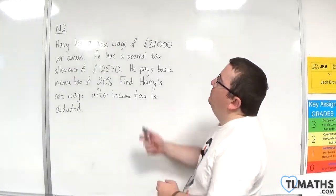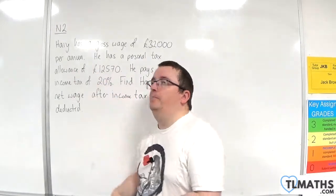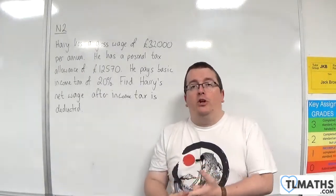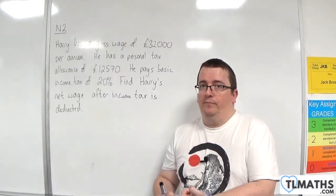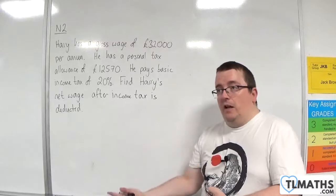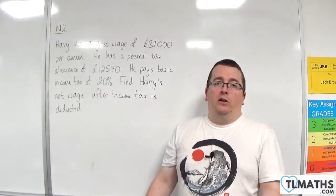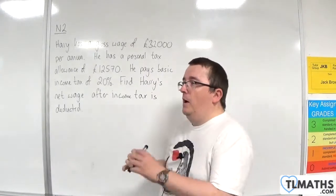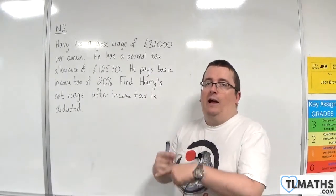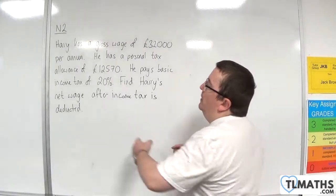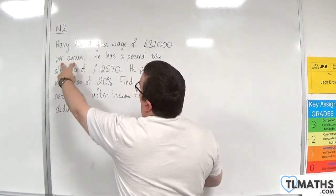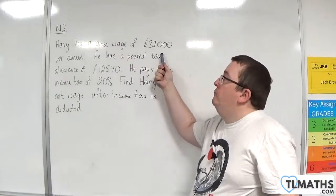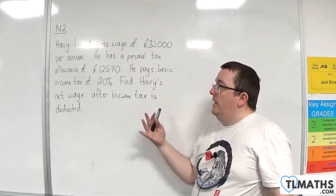Harry has a gross wage of £32,000 per annum. Your gross wage is the amount that you earn before tax is taken away — that includes income tax, national insurance, and could include a pension. That's essentially how much the pay is when you look at a job advertisement; they show the gross wage. Per annum means per year, so Harry's earning £32,000 per year, but he won't see all of that money — a chunk of it will go to income tax and national insurance.